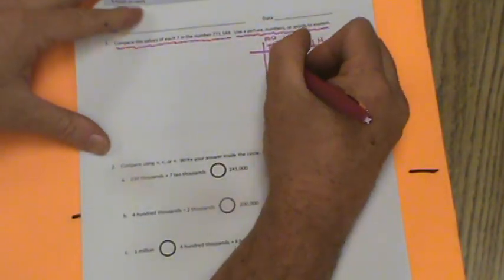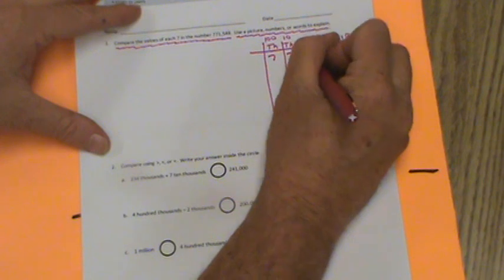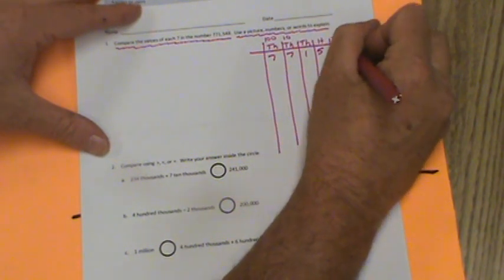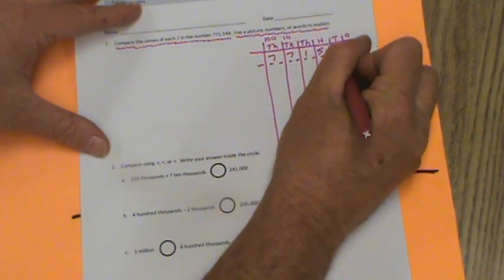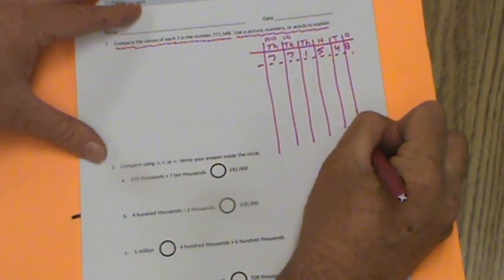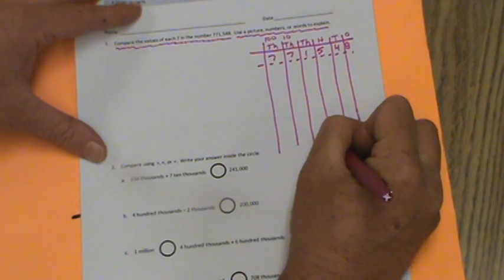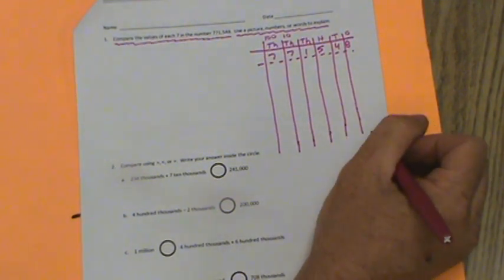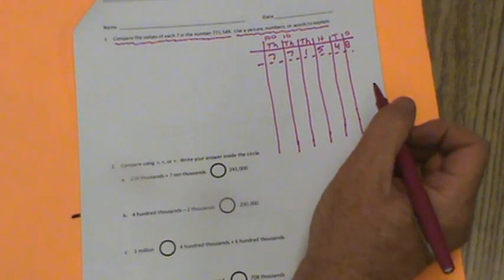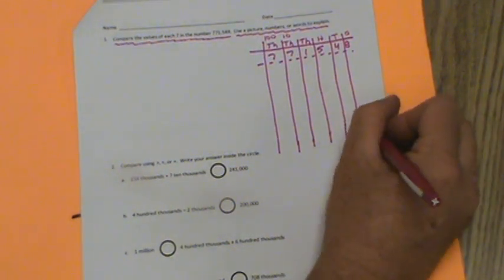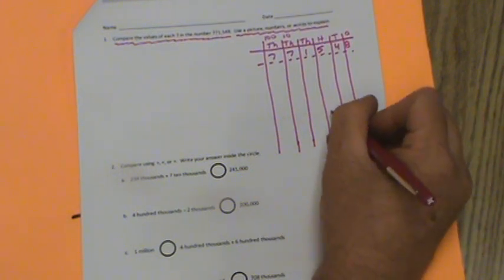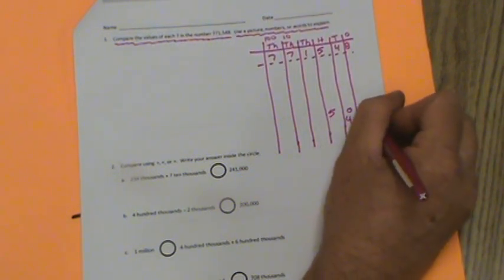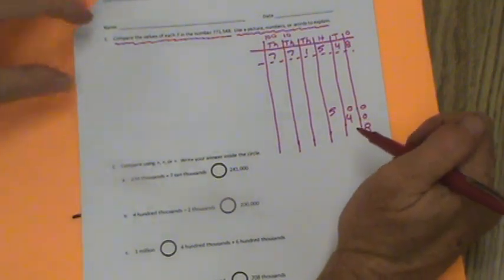Now we're going to put in the number. What's our number? 771,548. I'm going to put a little dotted line across here. Your job is now to compare the values of the two sevens. You're going to start with the eight down here, then you'll go 40, and the five is for 500, and then you complete the rest.